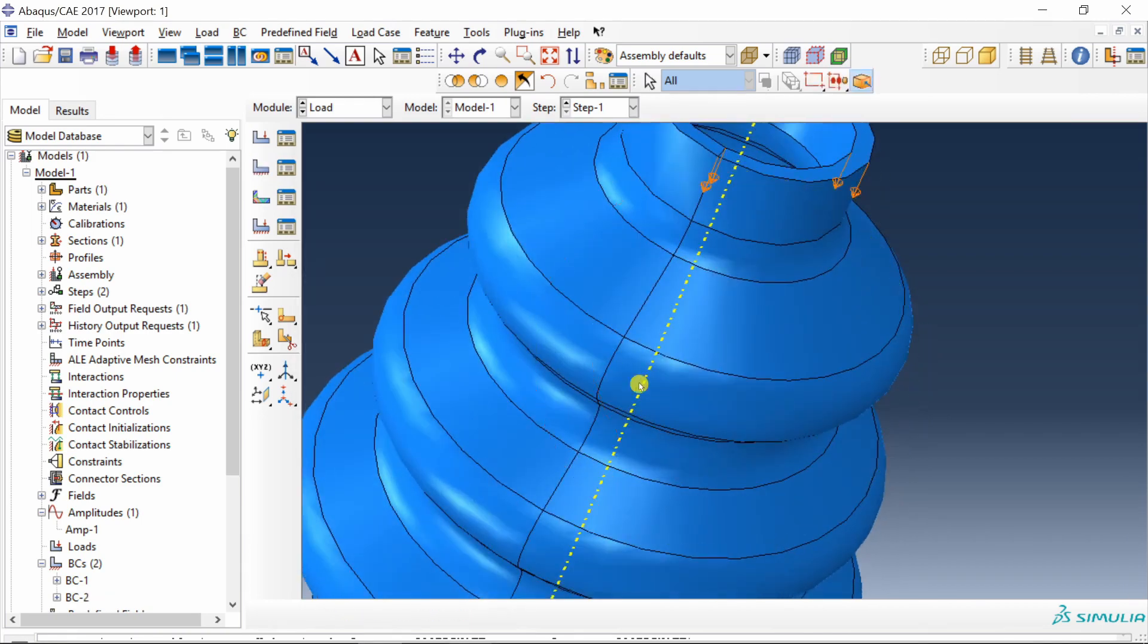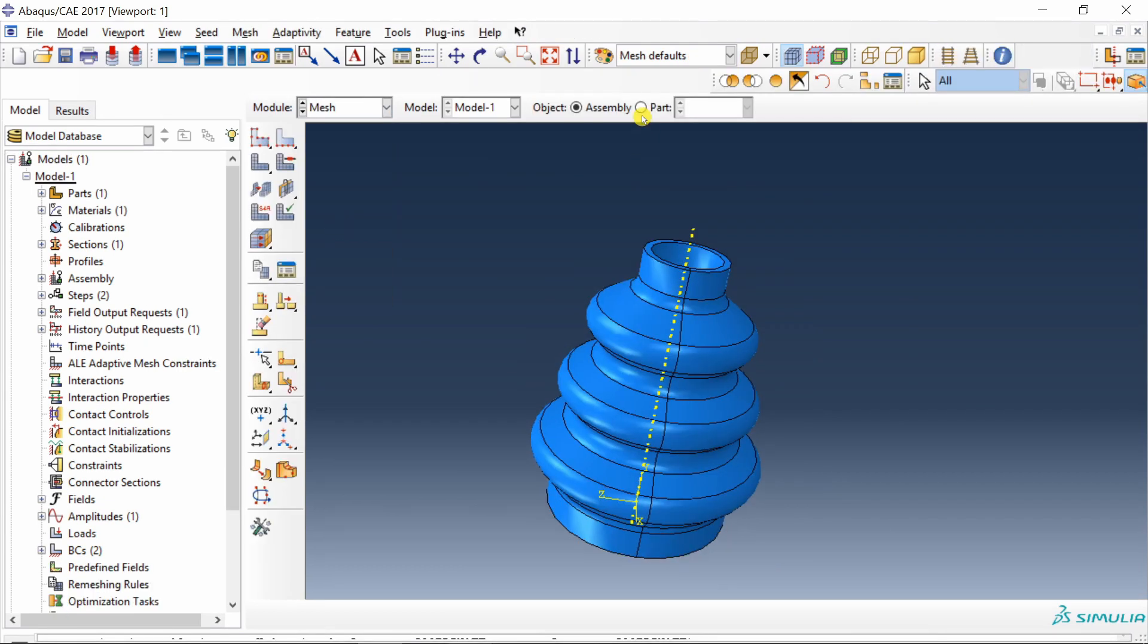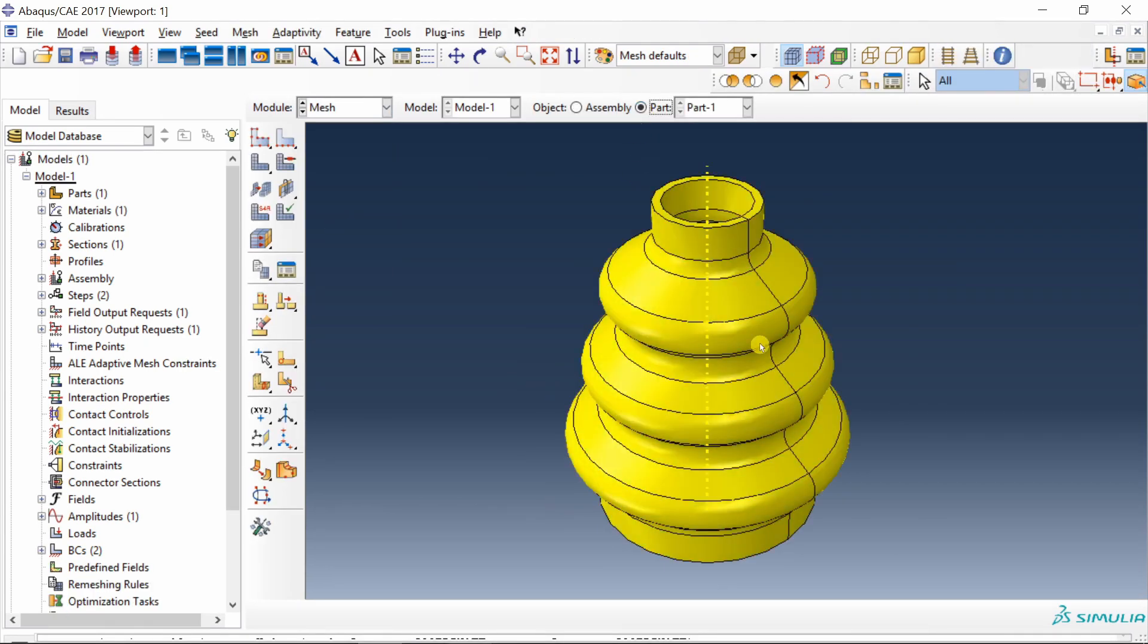Next go to mesh. Select part over here first. When you see part in a yellow color, it means the mesh will be constructed using sweep technique.